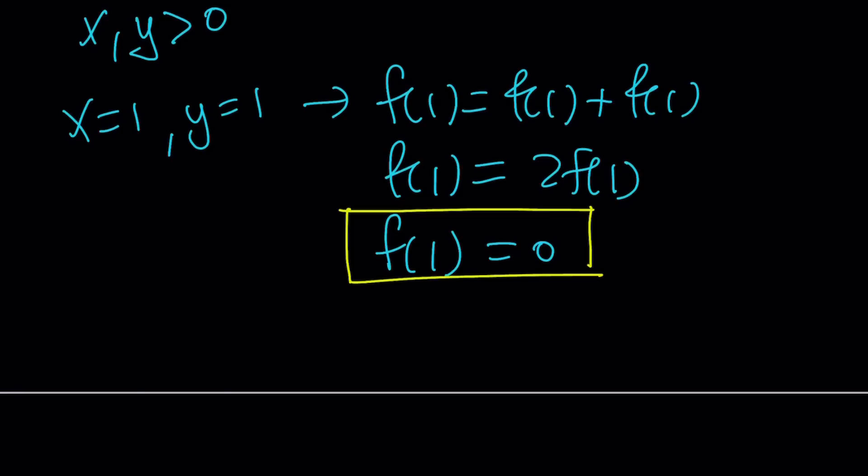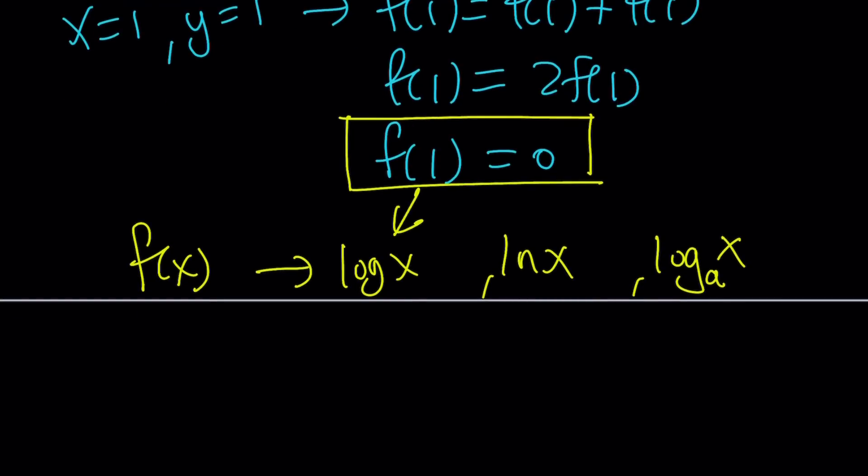But I'm like, hmm, f of 1 equals 0 kind of gives me a little bit of a clue. So, like, f of x could be maybe something like log x or ln x or maybe any log x, like any base. Log x with base a, right? Okay, looks good because in all cases f of 1 will be 0. But we can't go backwards, guys.